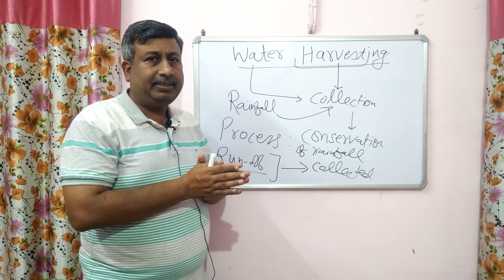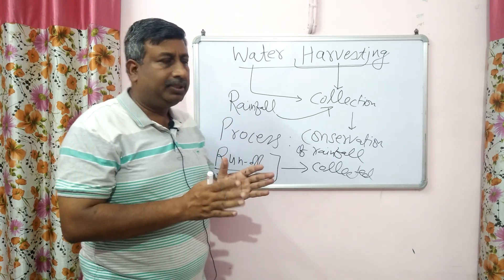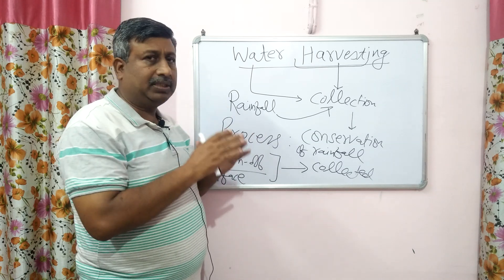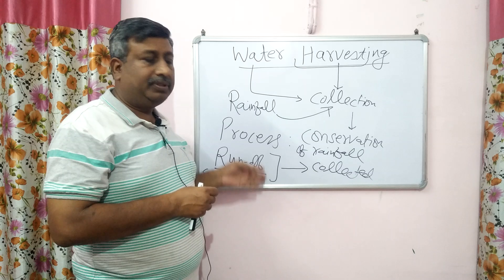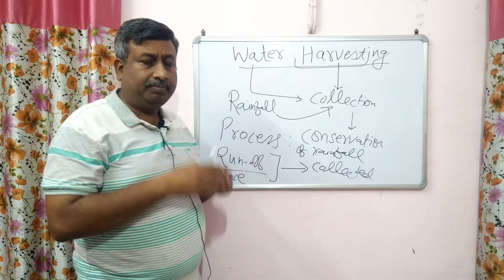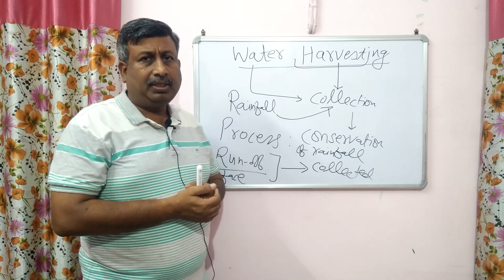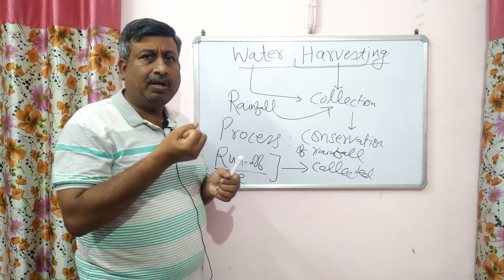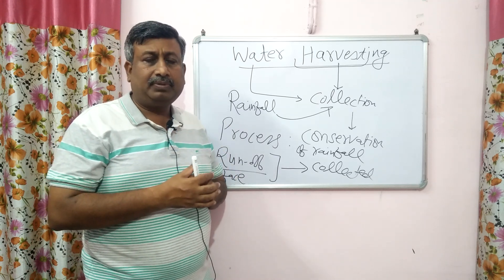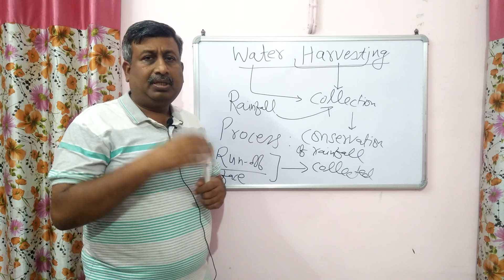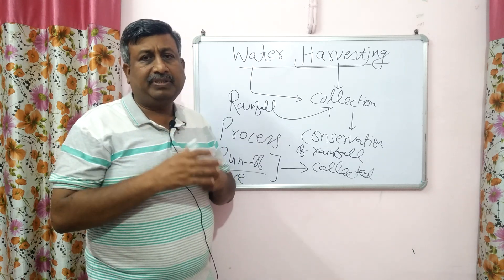This is a very simple concept. Water harvesting is the collection of surface runoff. It means we can say it is the conservation of rainfall — ultimately we are conserving the rainfall water. So water harvesting is the process of collection, storage, and conservation of surface runoff.